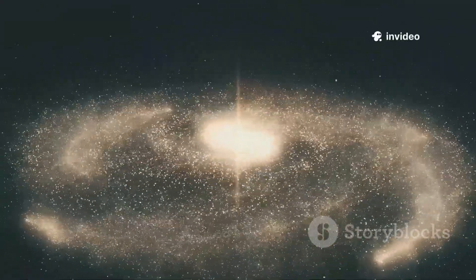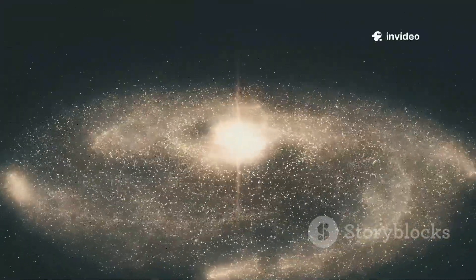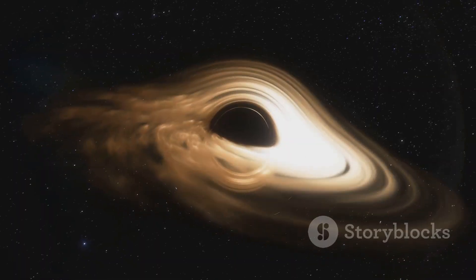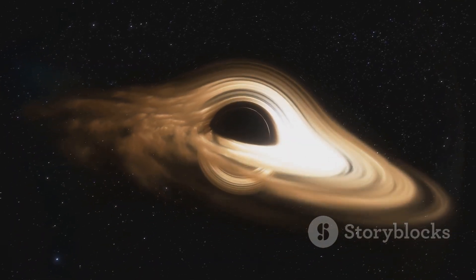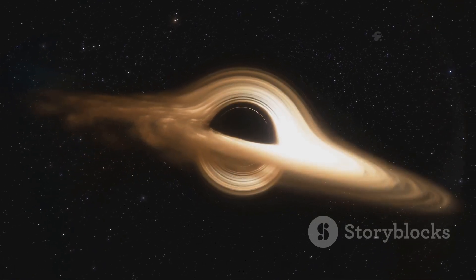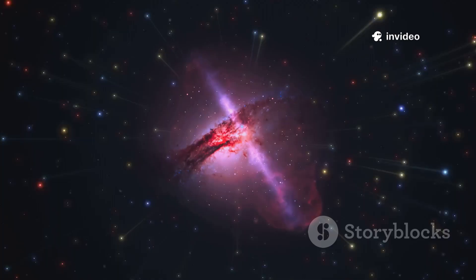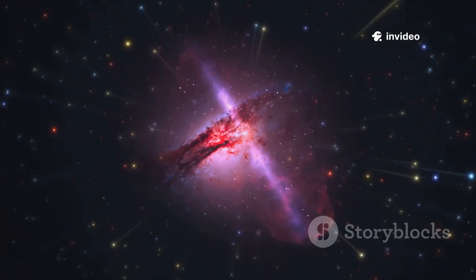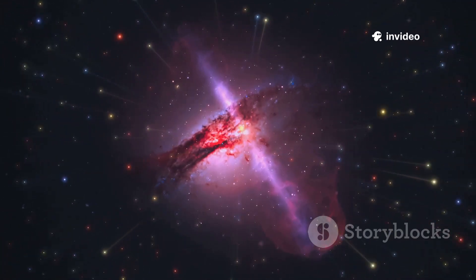Galaxies weren't the only things growing fast. So were black holes. Standard theory says supermassive black holes grow slowly from stellar seeds, limited by how fast they can feed. But Webb found black holes in the early Universe that are far too big, far too soon.